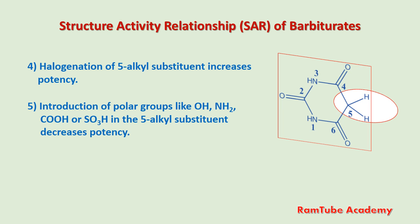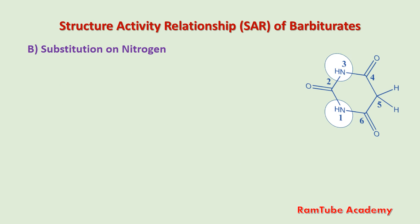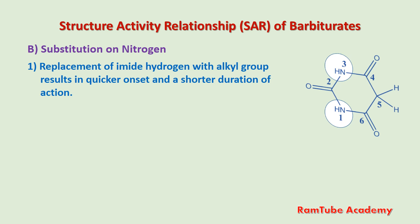Short chains at carbon-5 produce long-acting barbiturates, whereas long chains produce short-acting barbiturates. The second site is substitution on nitrogen.